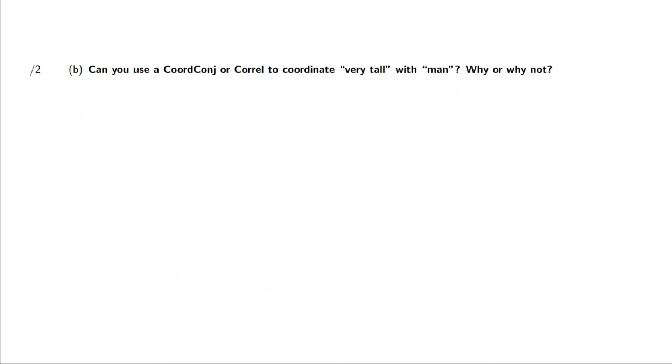Second one, can you use a coordinating conjunction or correlative to coordinate very tall with man? Why or why not? Well, very tall is an adjective phrase. And man is a noun phrase. And the one thing about conjunctions, specifically the coordinating conjunctions and correlatives is that when you coordinate or correlate two things, they must be the same type of constituent. So we'd have to say something like very tall and rather slim, or maybe something like man and his best friend, or man and woman. We can't just say, oh, yeah, I met the very tall and man yesterday. That doesn't make sense.